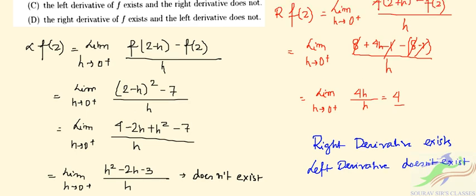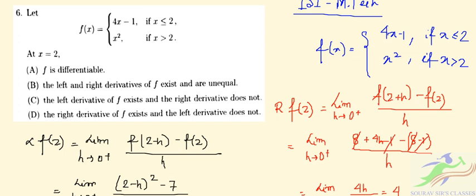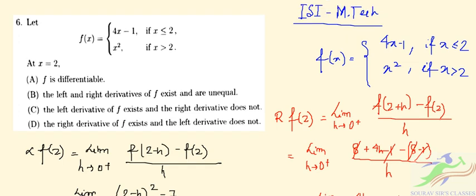Let us check the options for question number 6. The correct option is that the right derivative exists and the left derivative doesn't exist. So option D is the correct one: the right derivative of f exists and the left derivative doesn't.